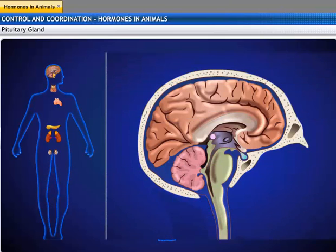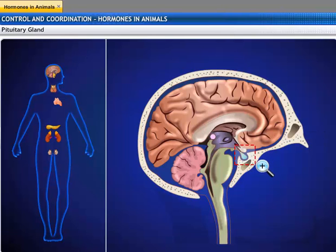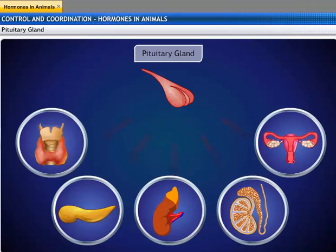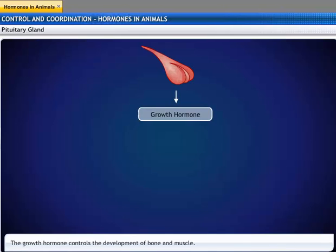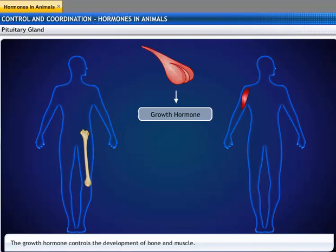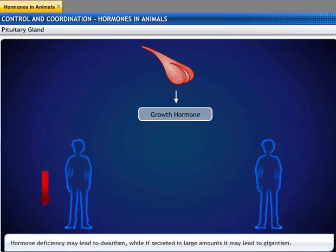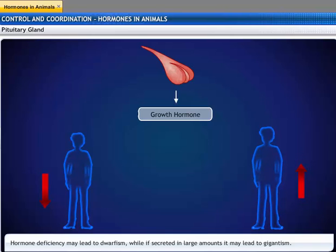The pituitary is a pea-shaped gland present at the base of the brain. It is connected to the ventral wall of the diencephalon. It secretes a large number of hormones that regulate organs as well as other glands, hence it is also known as the master gland. One of the hormones it secretes is the growth hormone, which controls the development of bones and muscles. Hypo-secretion of this hormone in childhood leads to dwarfism, while hyper-secretion can lead to gigantism.